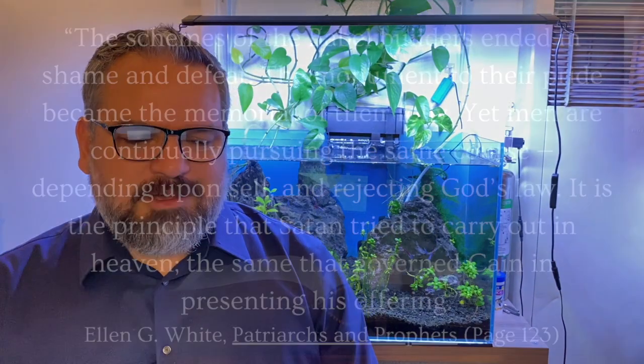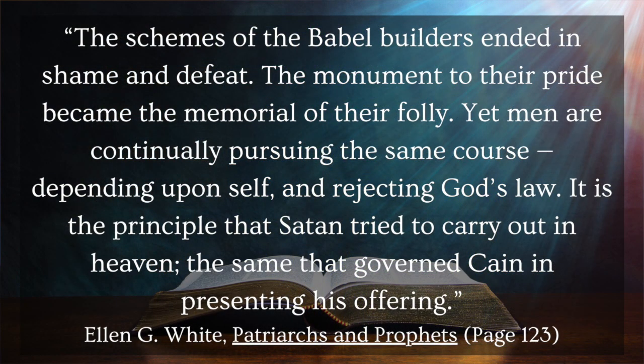God had to come down and break up that party so they could wake up to their true condition and so they could walk in his commands, spread out and populate the earth. I want to wrap up with a couple things. One is this quote from Ellen White from Patriarchs and Prophets, page 123. She writes, the schemes of the Babel builders ended in shame and defeat. The monument to their pride became the memorial of their folly. Yet men are continually pursuing the same course, depending upon self and rejecting God's law. It is the principle that Satan tried to carry out in heaven, the same that governed Cain in presenting his offering.